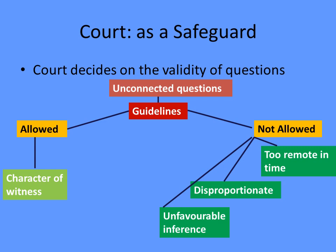An unfavorable inference is a very interesting concept — where the court thinks the witness is trying to hide something and that is why they are not answering. The witness's validity can be questioned for this reason. When the judge has already formed a view that the witness is not worth believing, the judge will stop the cross-examination and ask the advocate to conclude.